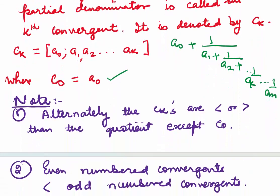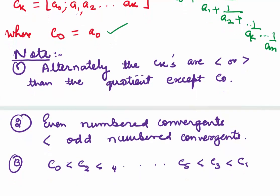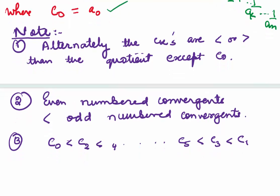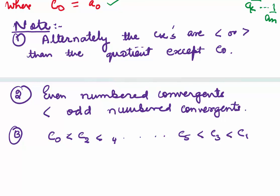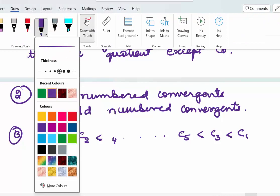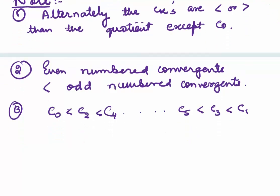A few facts. Alternately, the Ck's are less than or greater than the quotient except C0. Second, the even numbered convergents are always less than the odd numbered convergents. In a nutshell, you see C0 < C2 < C4 < ... and C5 < C3 < C1. When we solve problems, this will be clear.